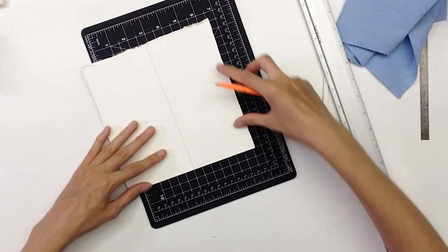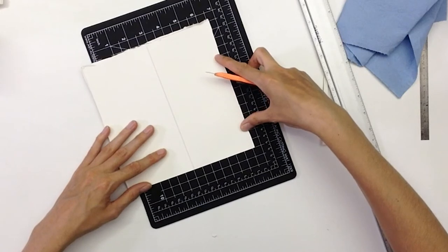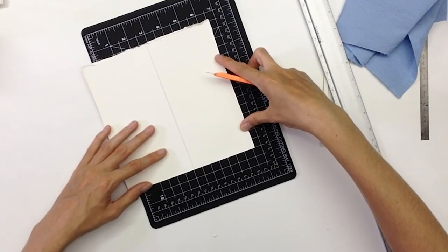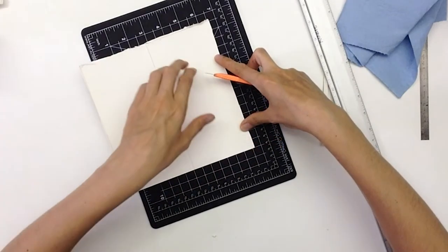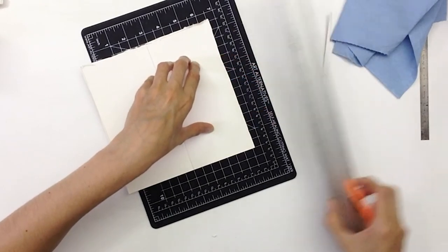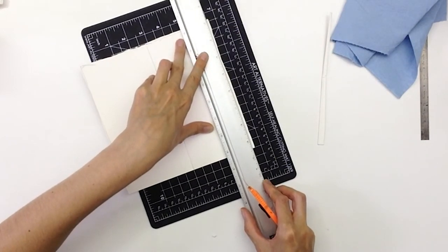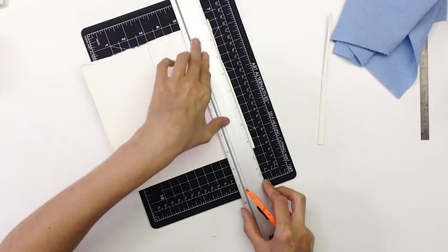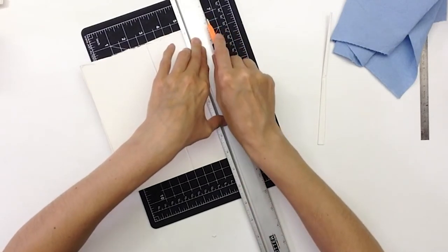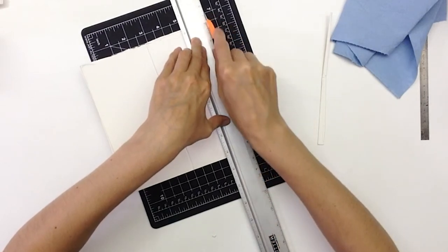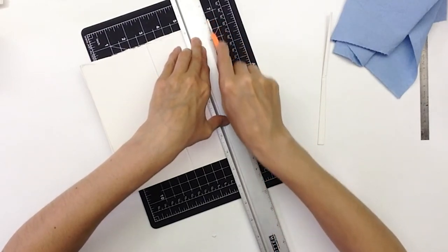So now that I have one even cut, I'm going to very precisely line that up with one of the horizontal edges. Line my ruler up with the vertical edge, and because I'm trying to maximize the plate size, I'm trying to keep the ruler as close as possible to the rough cut edge.